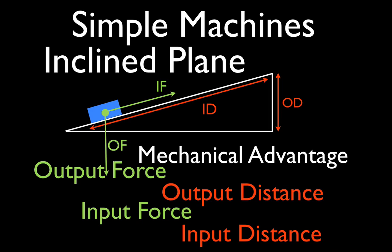In today's video I'm going to go over the following terms: output force, input force, output distance, input distance, and mechanical advantage as it relates to one type of simple machine which we call the inclined plane or the ramp.